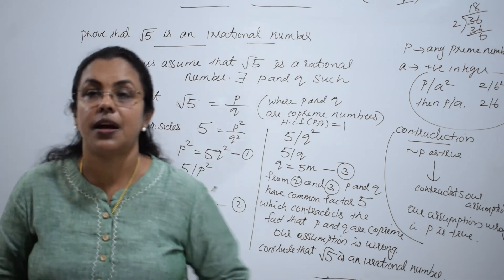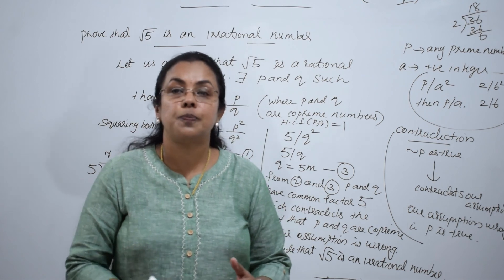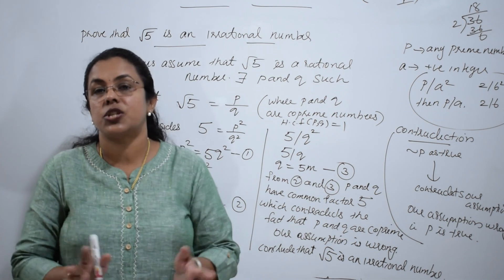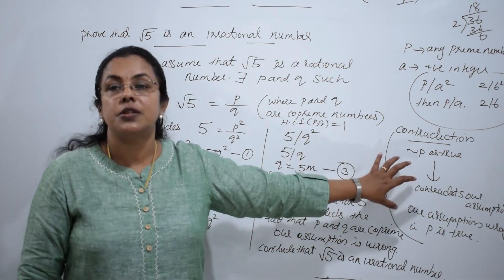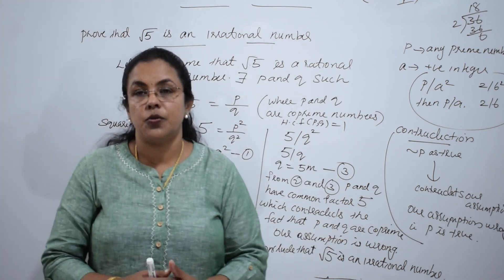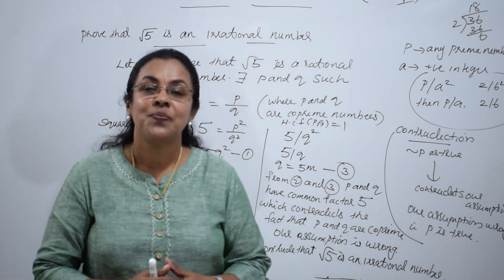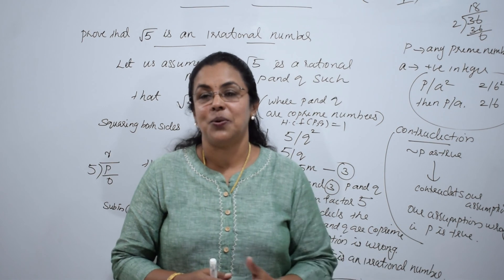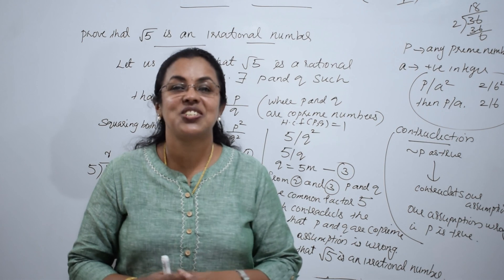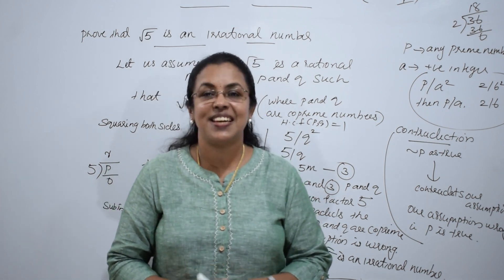Hope you are clear with the concept of how to prove root 2, root 3, root 5, etc. as irrational numbers — very easy. With the method of contradiction and this theorem, we can prove it. Hope all of you are enjoying my classes. Thank you for watching. If you have any doubt, comment below — I am here to support you. If you like my videos, like, share, and subscribe. I will be back with more videos. Till then, bye.